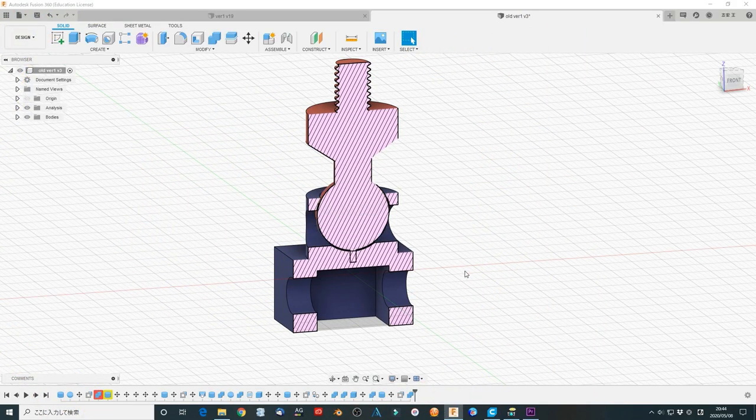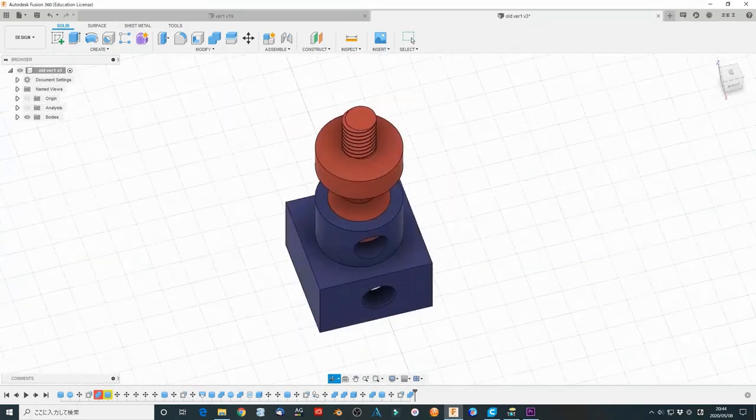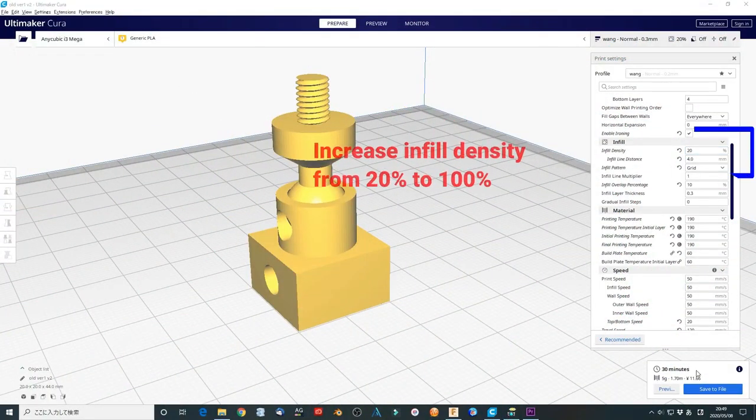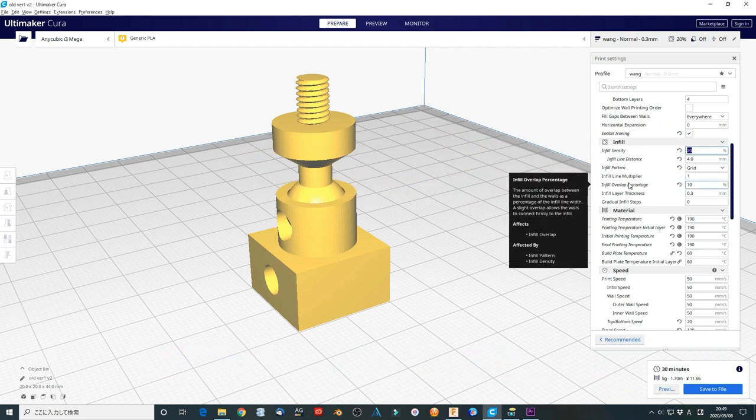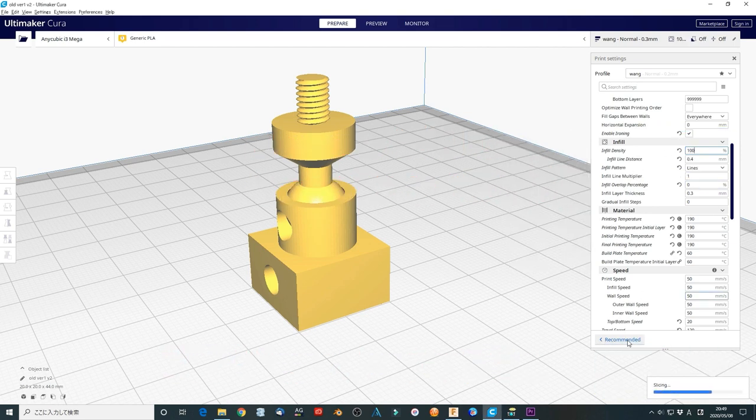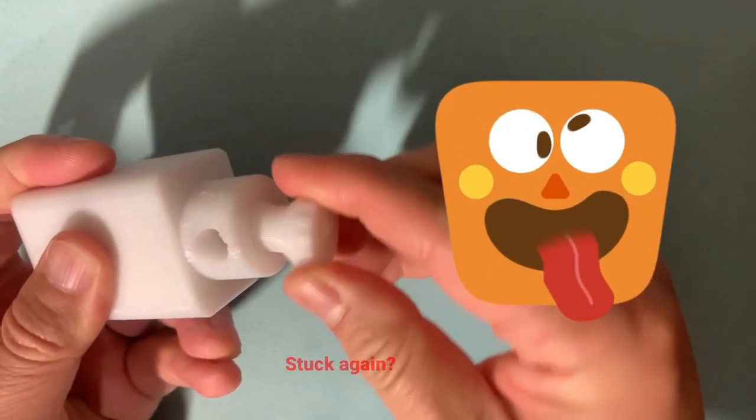Okay, I figured out that maybe the 3D printer infill density is not high enough. Increase to 100%. It took much longer time to print. This is the price you pay to get quality, am I right? My goodness, it's stuck again.